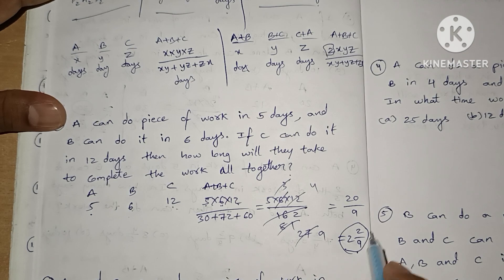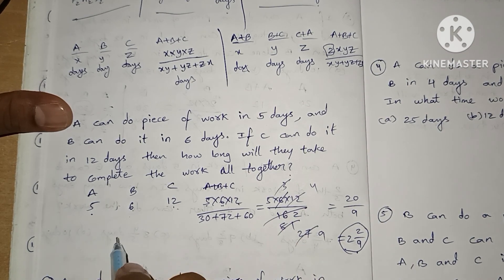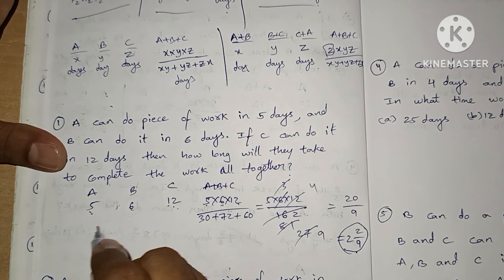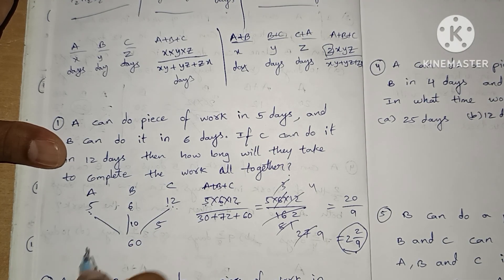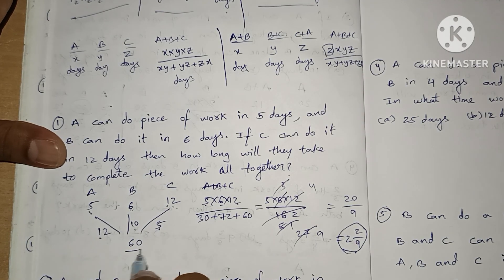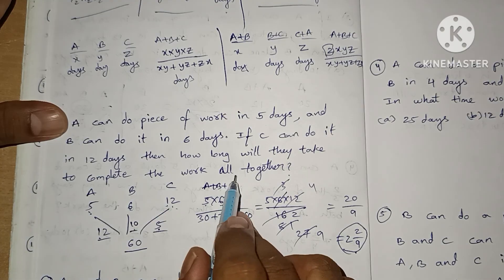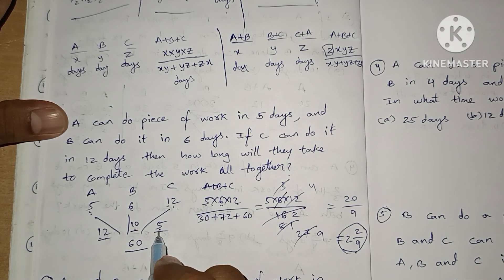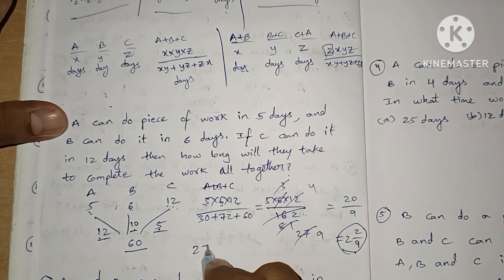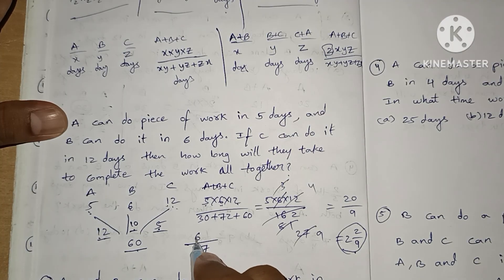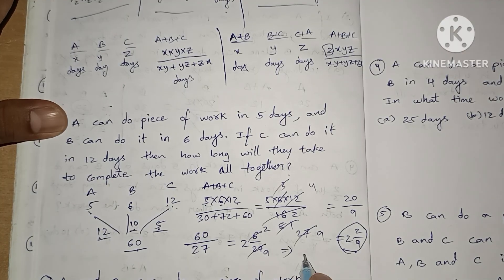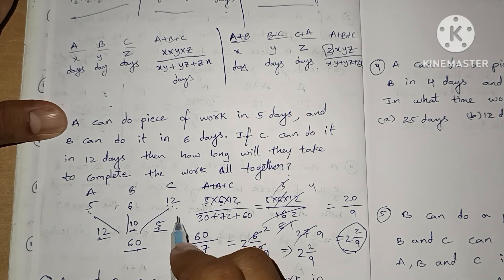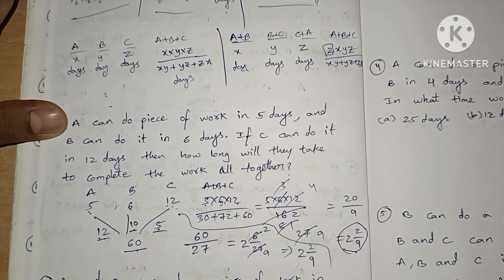Instead of using the formula method, let's now solve using the LCM method. For A=5, B=6, C=12, the LCM is 60. The efficiencies are: A does 60/5=12 units per day, B does 60/6=10 units per day, and C does 60/12=5 units per day. Together they do 12+10+5=27 units per day. To complete 60 units at 27 units per day: 60/27 = 2 and 2/9 days — the same answer. The LCM method is more efficient here.